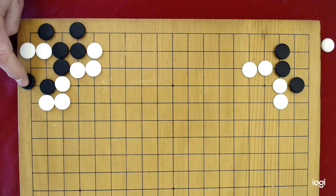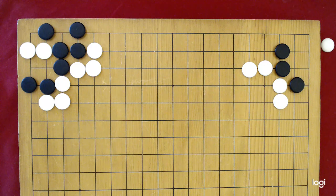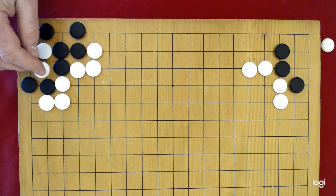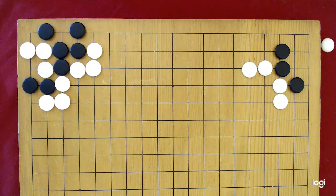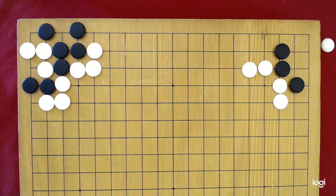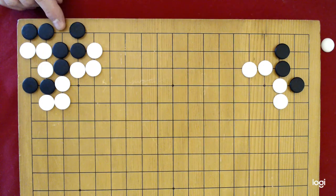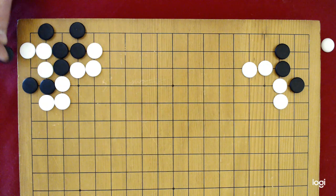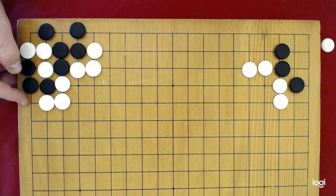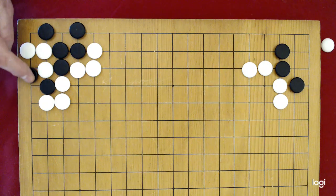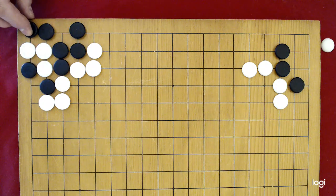Notice though that if black had played this move instead, that white would be able to come and play this move. And now what happens is black can't Atari from this side because they get captured and they can't Atari from this side because they get captured. So this move here makes it so when white plays there, black can capture.